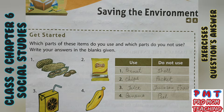Which parts of these items do you use and which parts do you not use? Write your answers in the blanks given. First, we use peanuts but we don't use the shell or covering. Second, we eat chips but we don't use the packet or wrapper. Third, we drink juice but we do not use the juice box, juice can, or straw after drinking. Fourth, we eat banana but we throw the peel off.